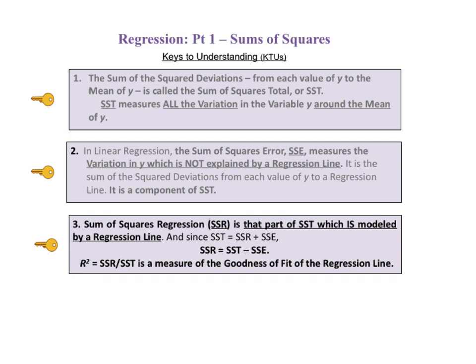The third key says sum of squares regression, SSR, is that part of SST which is modeled by a regression line. And since SST equals SSR plus SSE, then SSR equals SST minus SSE. R squared, which equals SSR divided by SST, is a measure of the goodness of fit of the regression line.